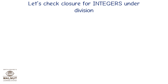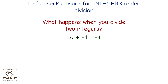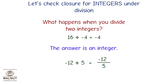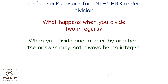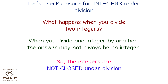Let's check closure for integers under division. 16 divided by minus 4 is equal to minus 4 — an integer. But minus 12 divided by 5 is equal to minus 12 upon 5, which is not an integer. When you divide one integer by another, the answer may not always be an integer. So integers are not closed under division.